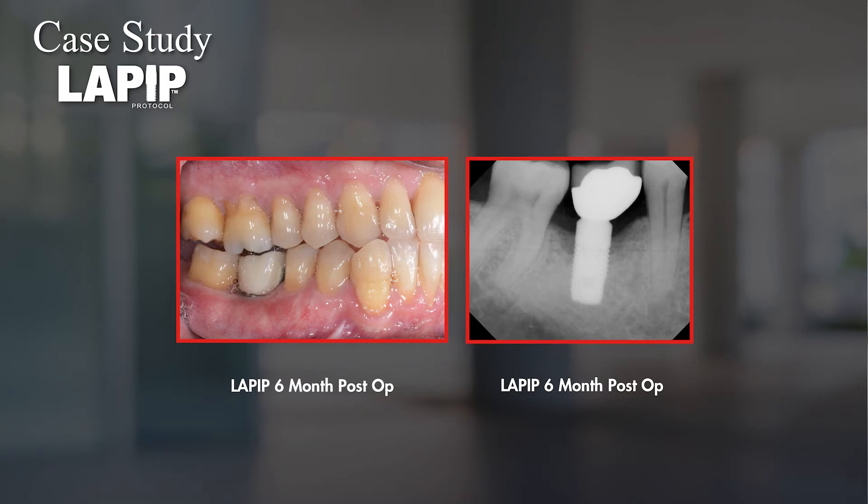As you'll see in the radiographs, we have increased radiopacity around that implant, decreased gingival inflammation, and we also got some tissue shrinkage around that area — so the tissue is tightening up and presents as healthy, firm, coral pink tissue around the implant, including the other tissue in the lower right quadrant.